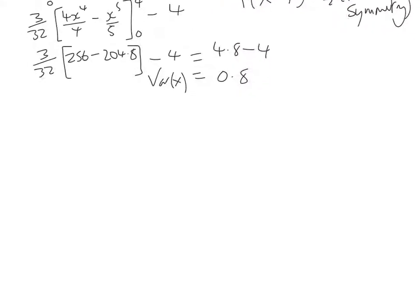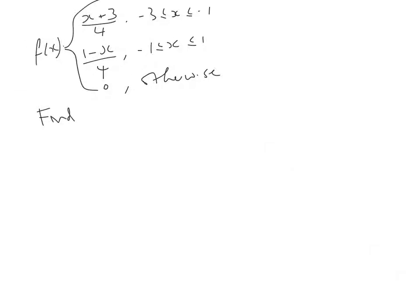I want to show you one more example of a symmetrical PDF where we don't have a quadratic. So this is why it's so important to sketch it, because you'll be able to spot the symmetry. So if we have a PDF, which is defined by x plus 3 over 4, and that's between minus 3 and minus 1, and we have 1 minus x over 4, and that's between minus 1 and 1, and it's 0 otherwise. So we want to find the expectation of x.